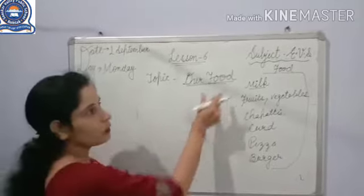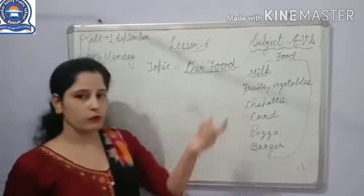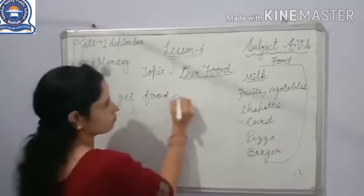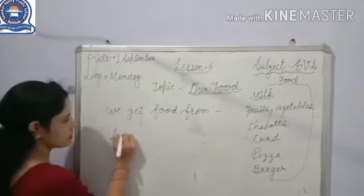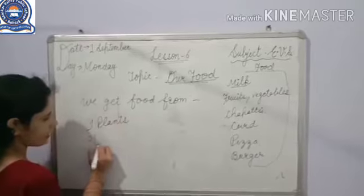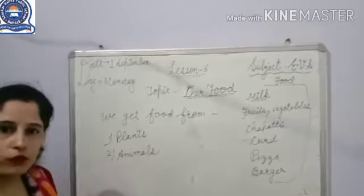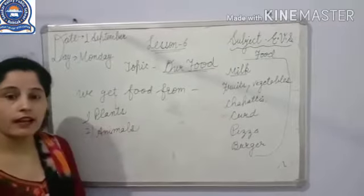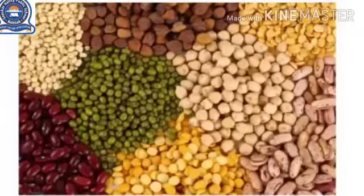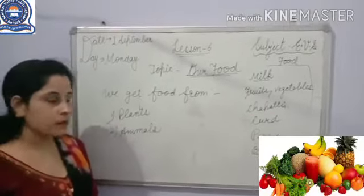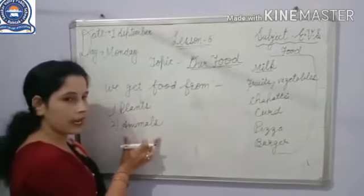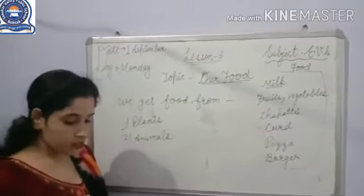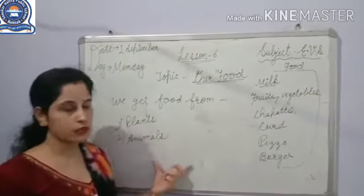Now we are talking about food. Firstly, we should know from where we get food. We get food from plants and animals. The food that we get from plants includes wheat, rice, pulses, cereals, fruits, vegetables, etc. And from animals we get meat, egg, etc. It is important to know from where we get food.